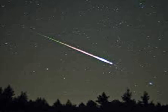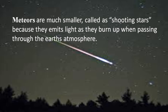Sometimes we observe a bright streak across the night sky, called meteors, also known as shooting stars. Meteors are much smaller bodies that emit light as they burn up when passing through the Earth's atmosphere, making them look like shooting stars.